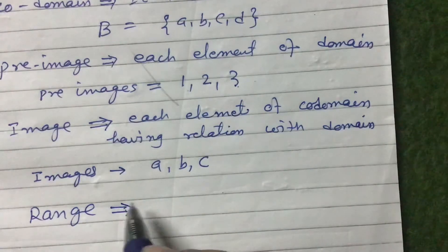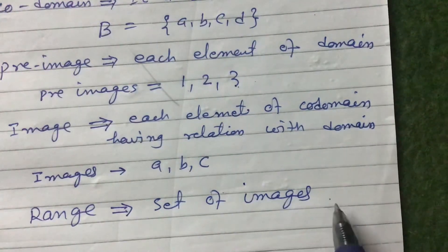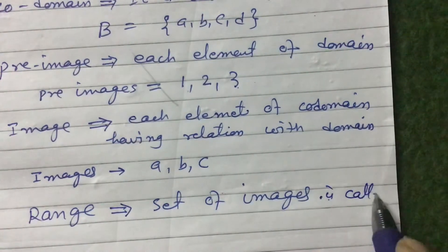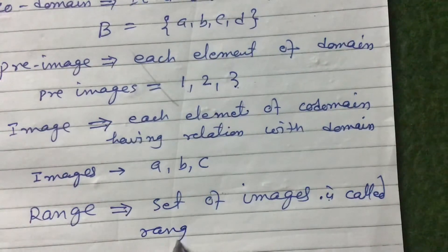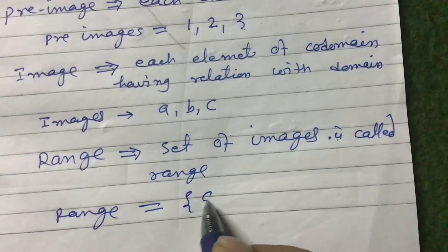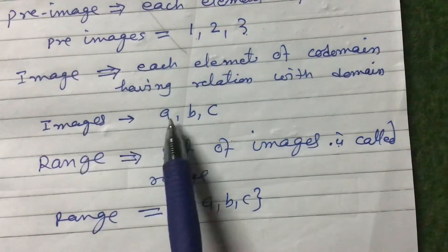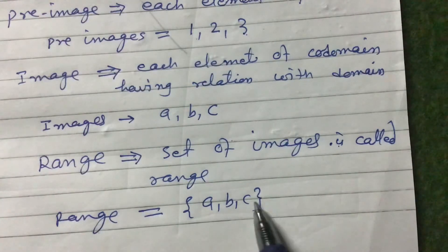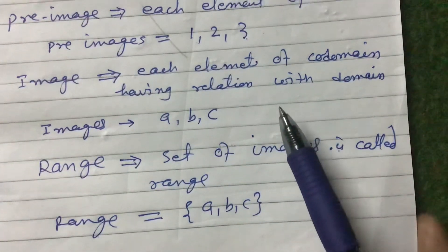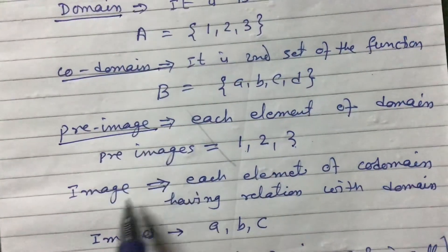Range means the set of all images. So range equals {a, b, c}. Note the difference between image and range: the images are a, b, c as individual elements with no curly brackets, while the range {a, b, c} is a set enclosed in curly brackets. In this way we can define all the parts of the function: domain, codomain, pre-image, image, and range.